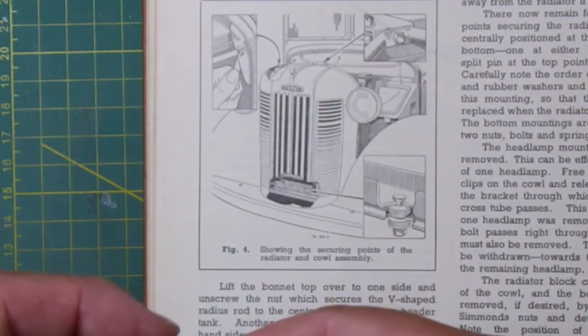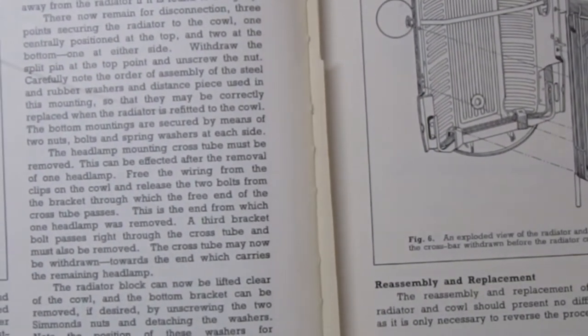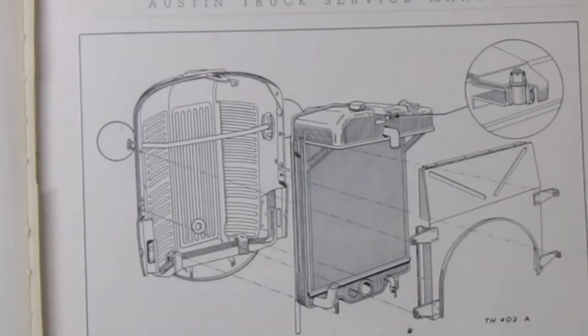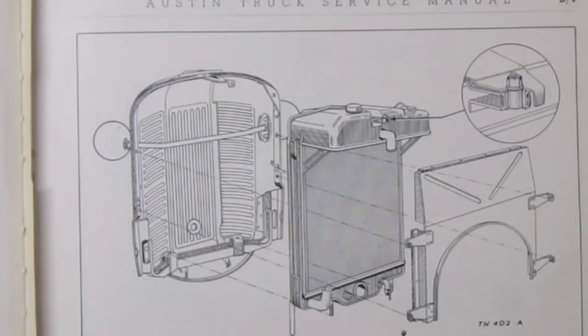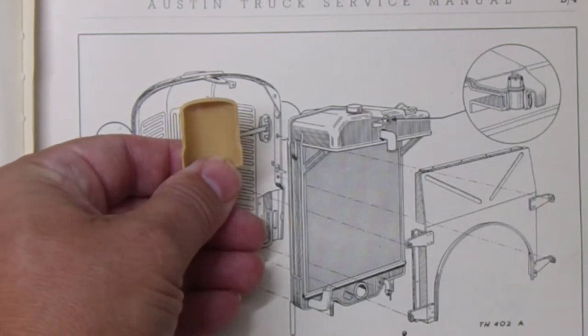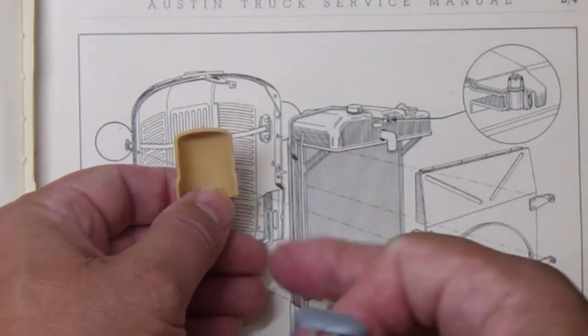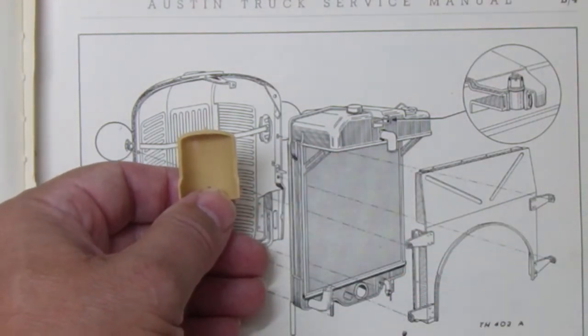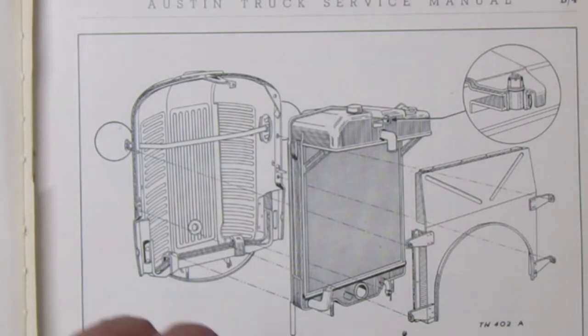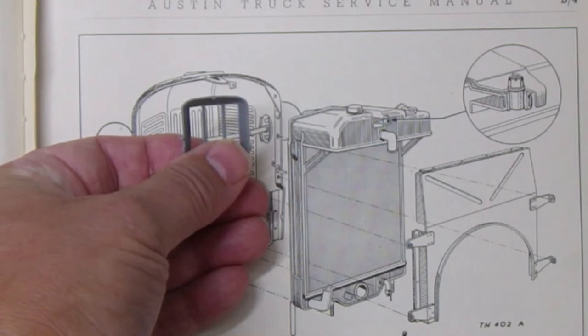...whereas the Gecko one doesn't. When we look at the other picture on this page, again looking from the reverse, the Airfix one maybe isn't quite as rounded as it should be, and the Gecko one clearly isn't the right shape compared to that.